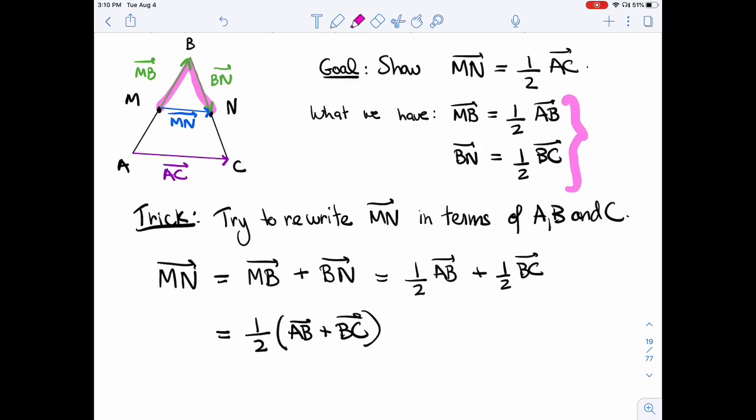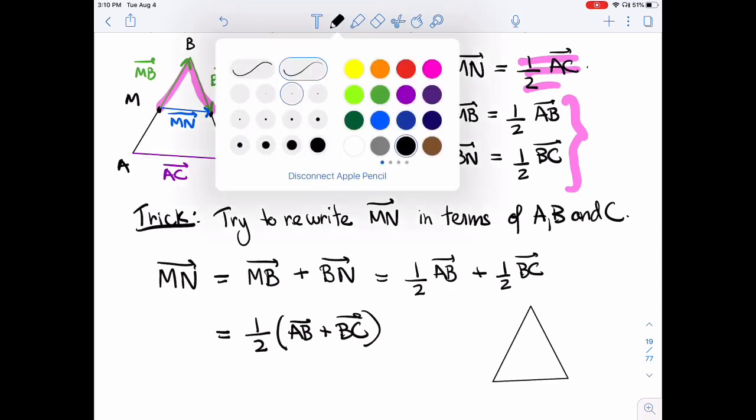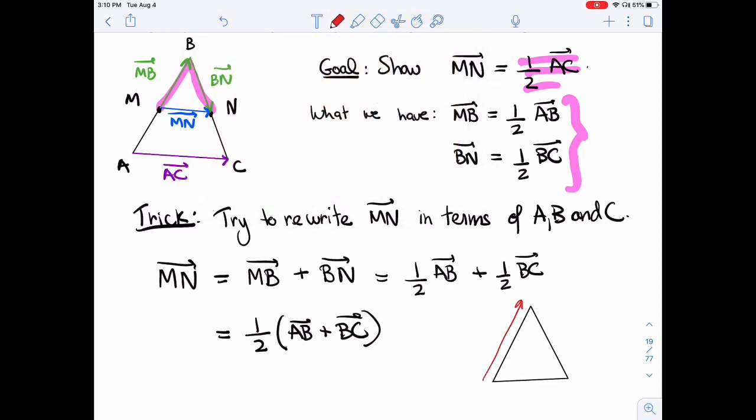So I'm very close to where I want to be. I have the half there and then I just have to worry about AB and BC. Well, let's see. Let me redraw that triangle.